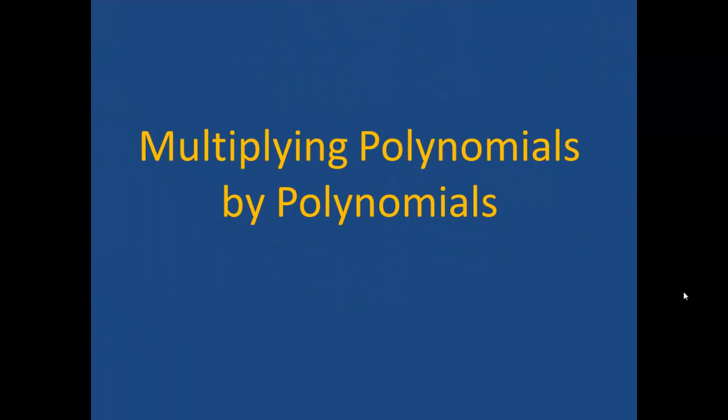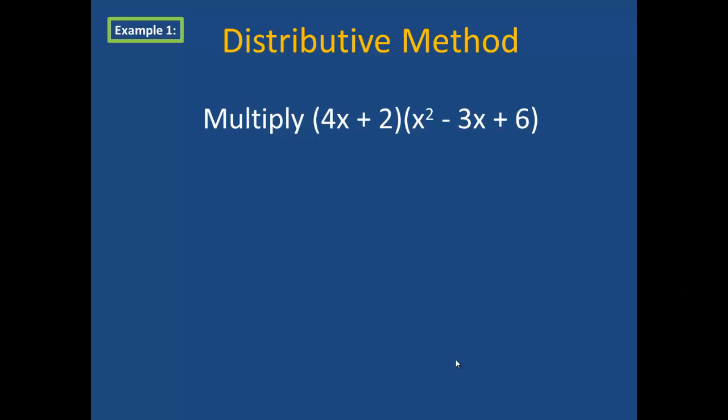We're first going to talk about multiplying a polynomial by a polynomial. In example 1, we are going to multiply the binomial 4x plus 2 times the trinomial x squared minus 3x plus 6. In doing so, I'm first going to multiply 4x times the entire second polynomial, which is x squared minus 3x plus 6.